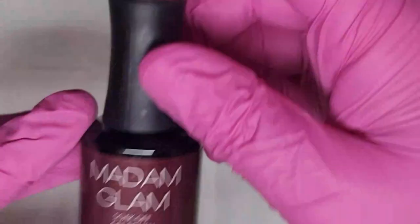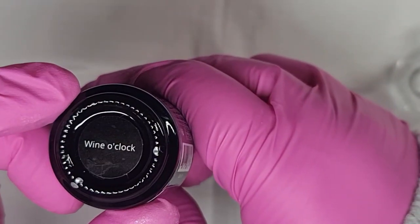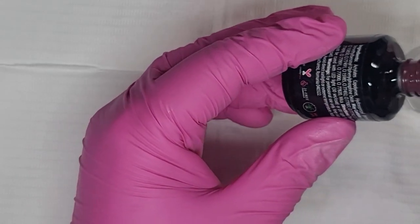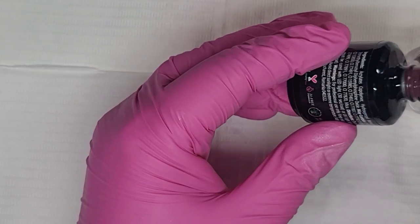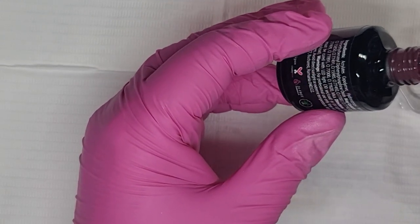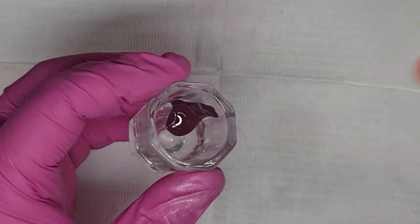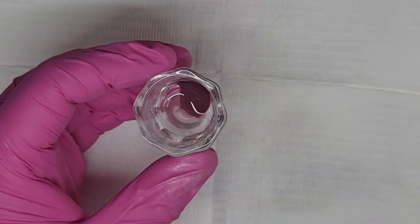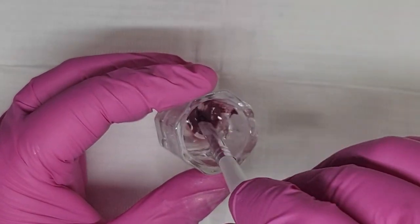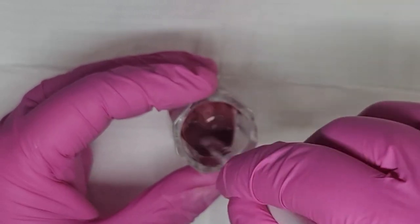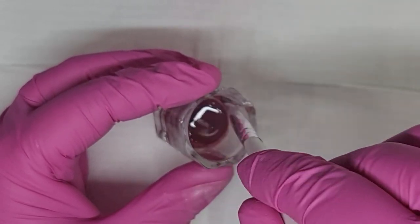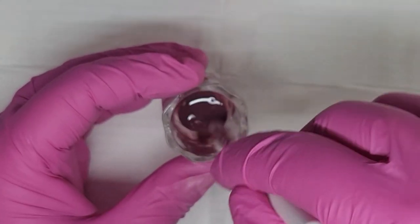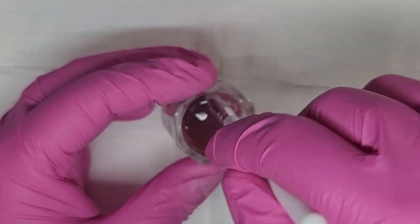So now I'm gonna come in with Madam Glam's Wine O'Clock. I'm just gonna do the same as what we did with the first color, and that is just doing a couple of drops of that. And I only want a little bit of acetone with this one because I'm only doing a small stencil. Make sure you mix it really well as well.